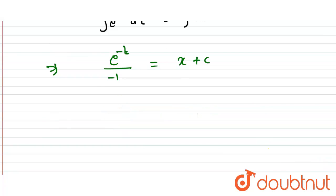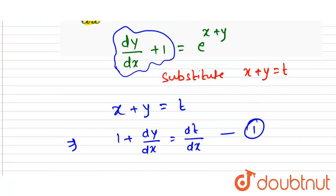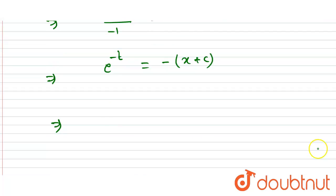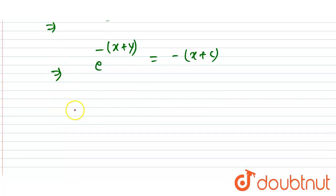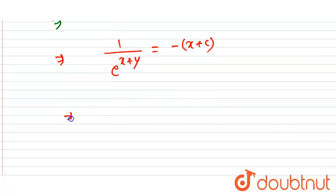We can write this as e to the power minus t equals minus of x plus c. Now, since t equals x plus y, we replace t with x plus y: e to the power minus (x plus y) equals minus x plus c. Therefore, 1 upon e to the power x plus y equals minus of x plus c.